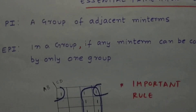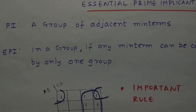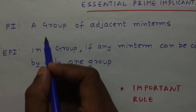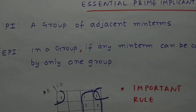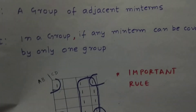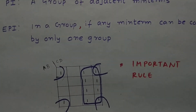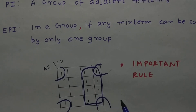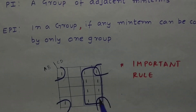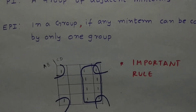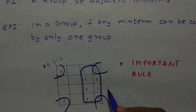According to our definition, a prime implicant is a group of adjacent min terms. In this example, we have two groups which are formed: one is a quad and another is an octate. So both of them are prime implicants — we have two prime implicants here.